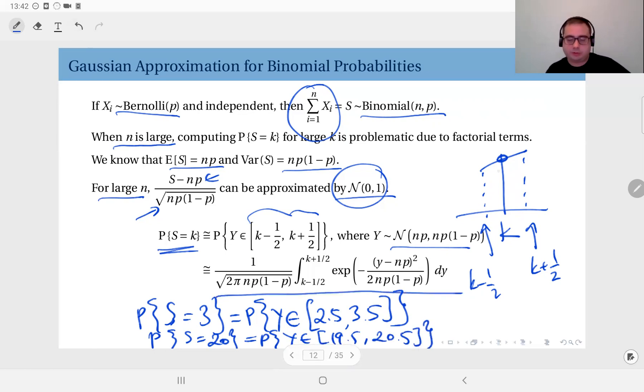So here you see how we can do that. Obviously this is the Gaussian pdf so integrated from k minus one half to k plus one half, this is the Gaussian pdf and that's it.